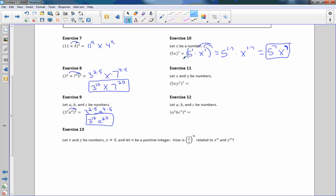Okay, exercise 11. Let X and Y be numbers. So we're just going to do the same thing here. I'm going to say 5 to the 1 times X to the 1 times Y squared all to the 7th power. And then we're going to distribute. This is going to equal 5 to the 1 times 7 times X to the 1 times 7 times Y squared times 7, which equals 5 to the 7th, X to the 7th, Y to the 14th.